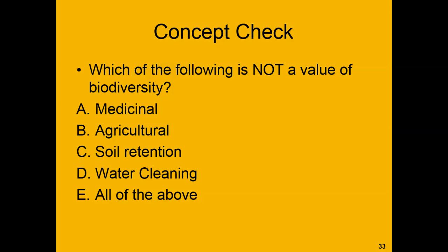Concept check: which of the following is not a value of biodiversity? Medicinal, agricultural, soil retention, water cleaning, or all of the above? The correct answer is all of the above. We have medicinal, agricultural, soil retention, and water cleaning uses of organisms within the environment. As we have more biodiversity, all of these processes will be enhanced.